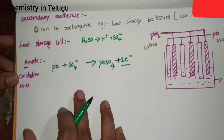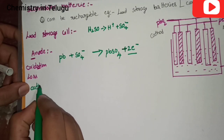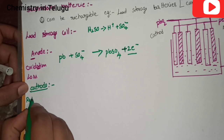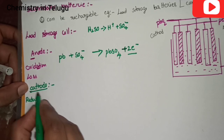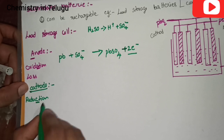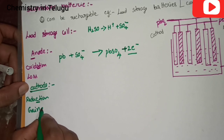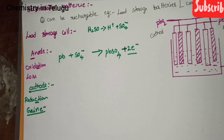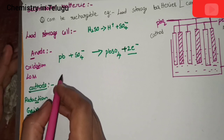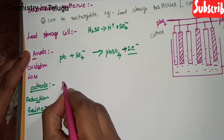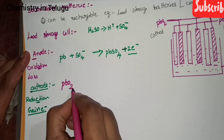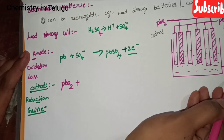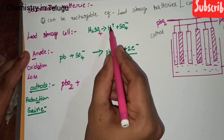At the same time, the cathode process is starting. The cathode undergoes reduction, which means gain of electrons. The cathode material is PbO₂ — lead oxide — and H₂SO₄ is present here, providing H⁺ ions.